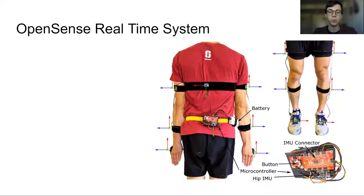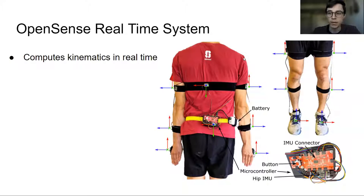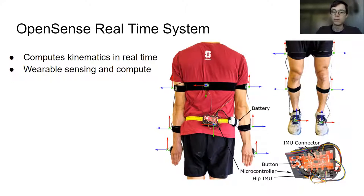We'll be talking about the OpenSense real-time system, which you can see here. Basically it's a pack that you wear on your back, which has a microcontroller and then a series of IMUs worn on different body segments to track motion. This system computes kinematics in real-time, and it uses both wearable sensing and computation. Everything's computed on board by this microcontroller, so it's very portable and you can use it in any environment.